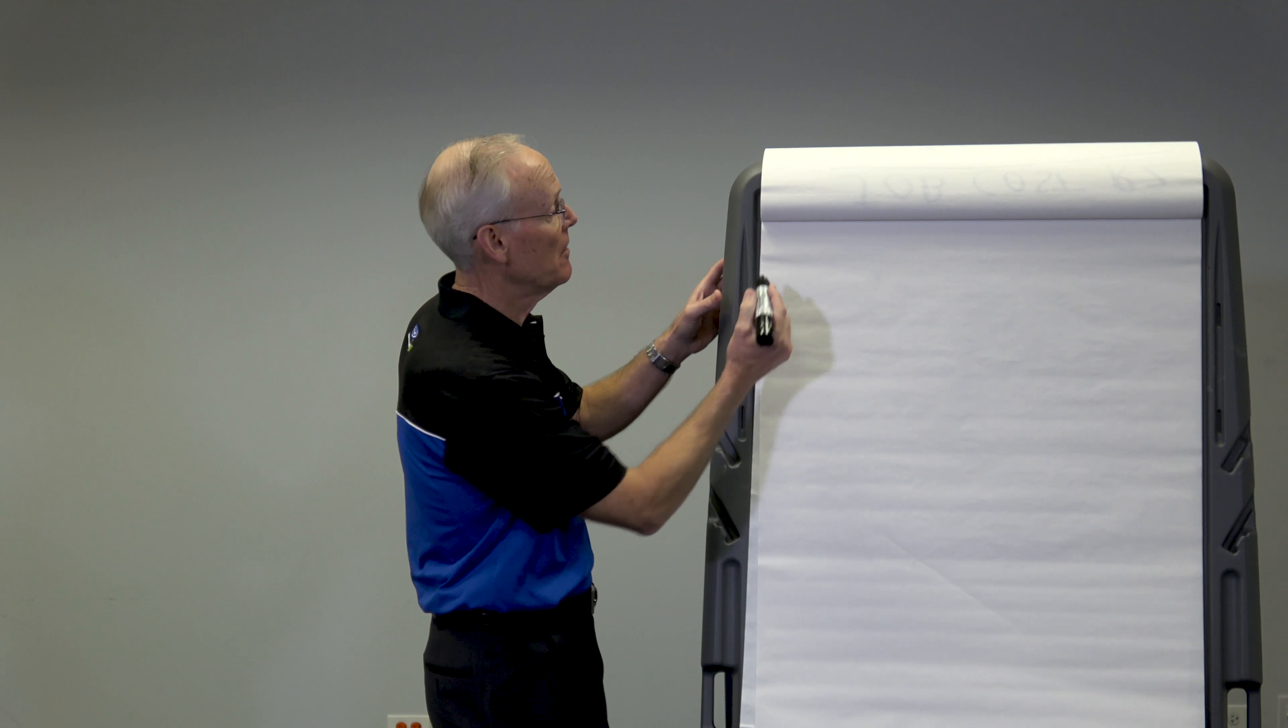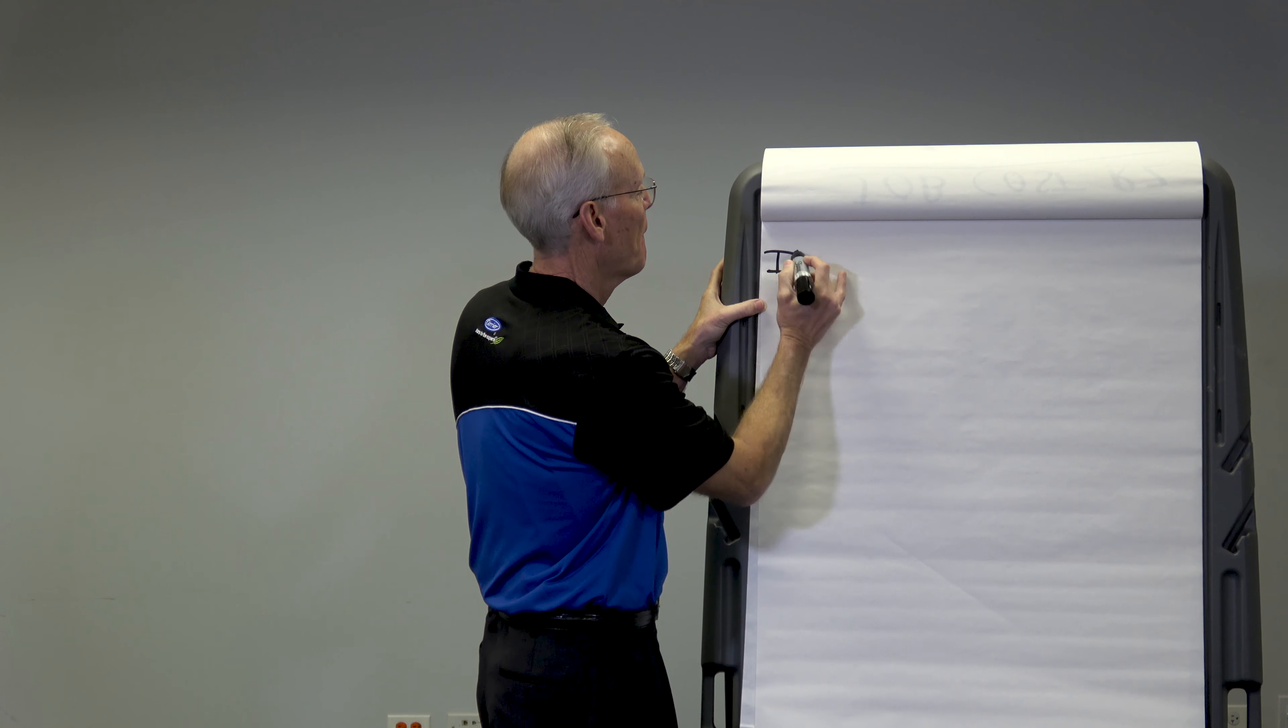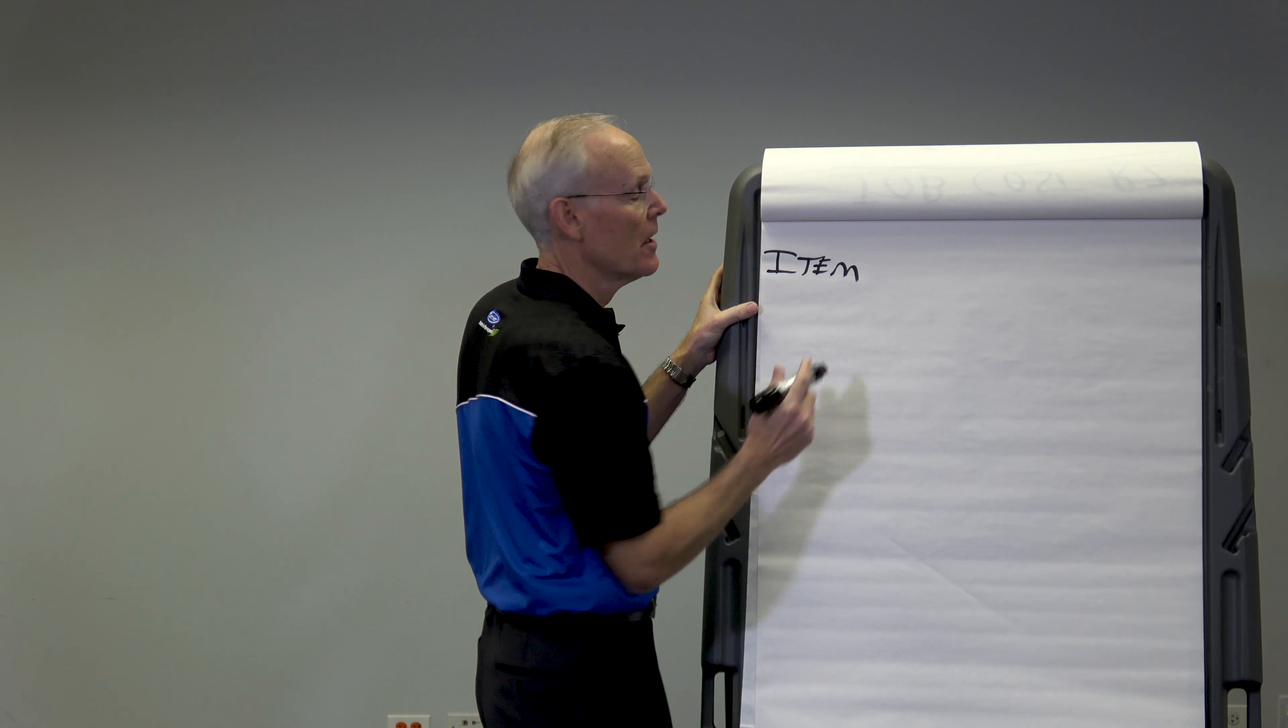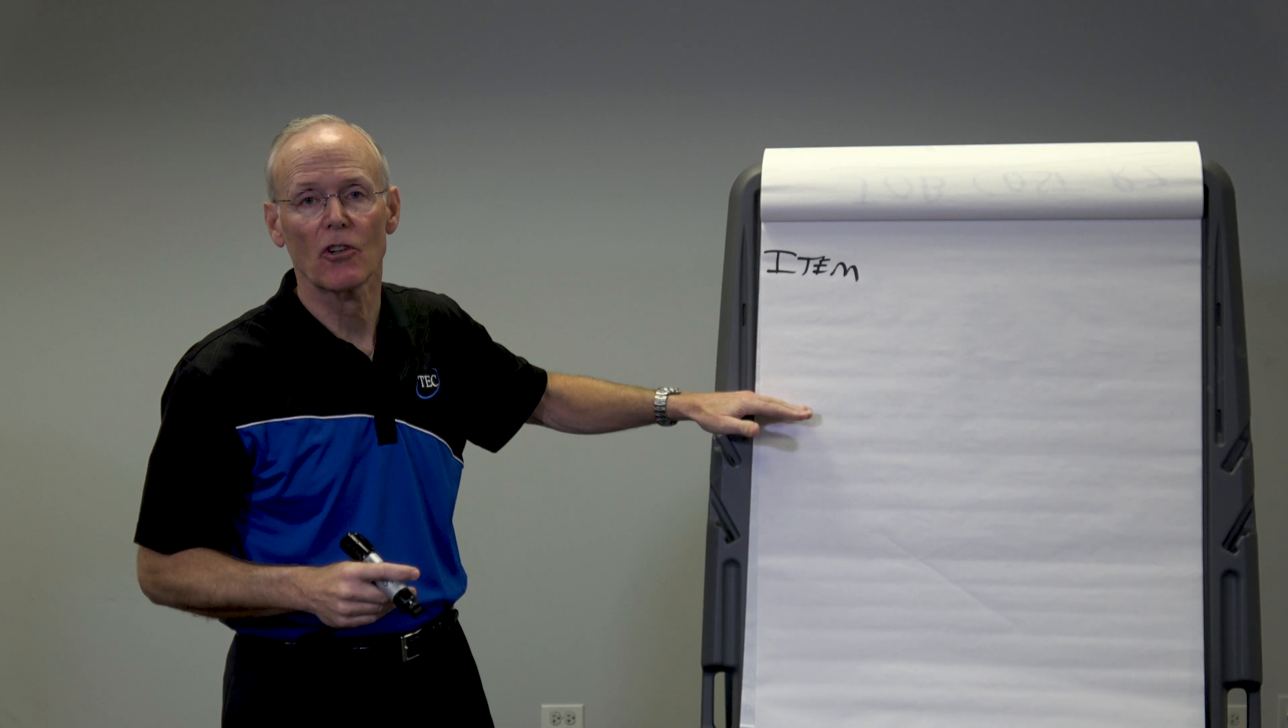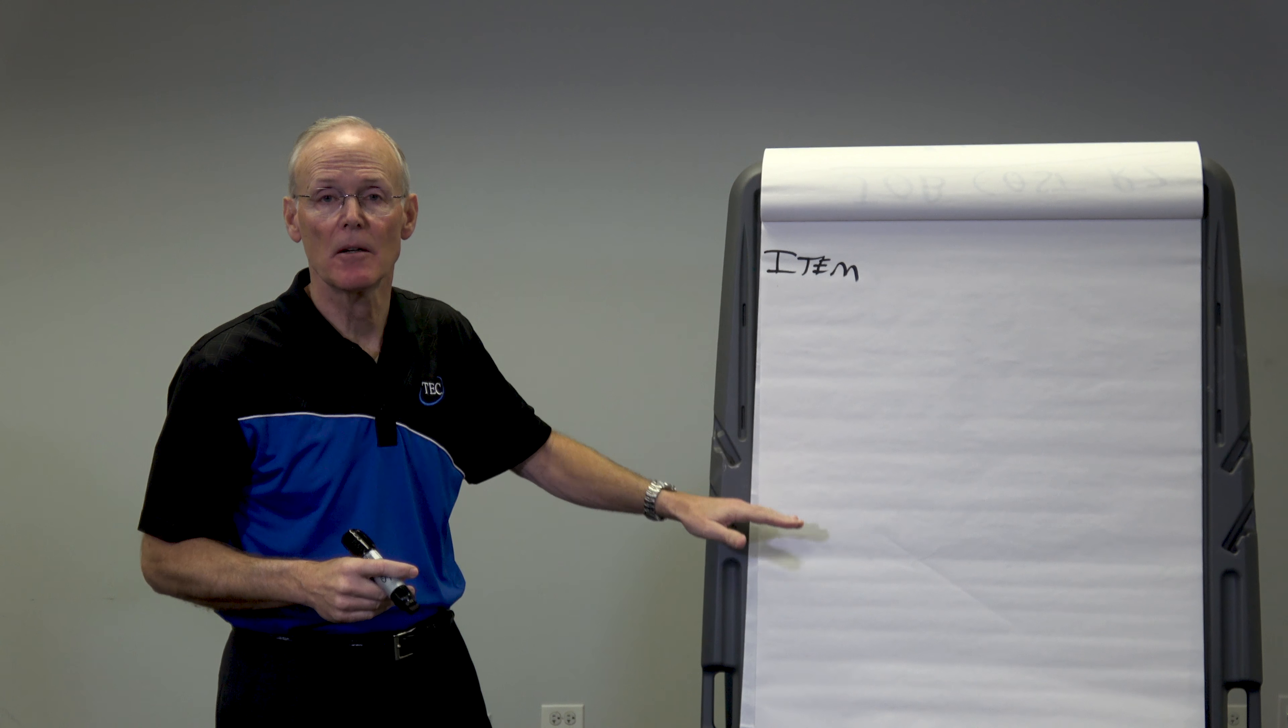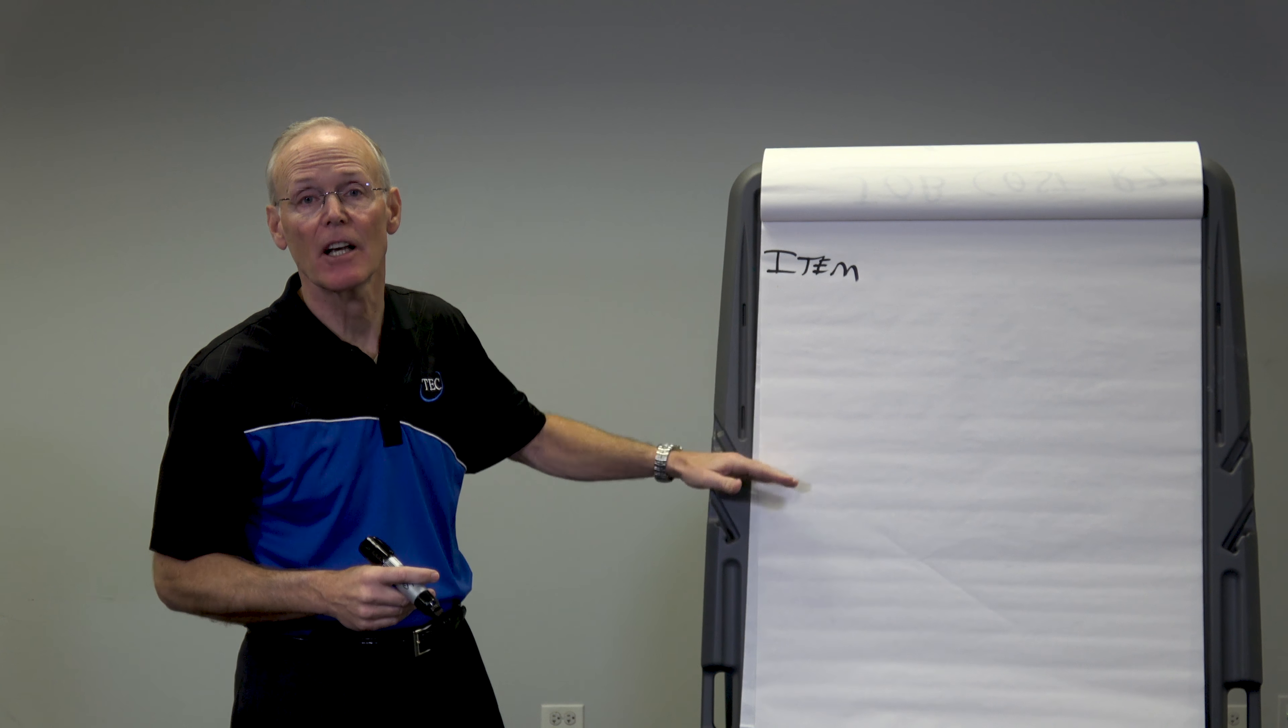So the first column you always have is the item number. These are things like sales, cost of sales, overhead, margin, net profit, things like that.